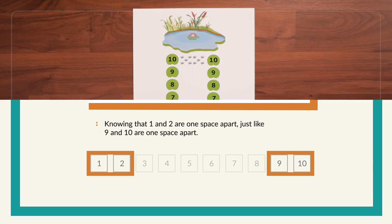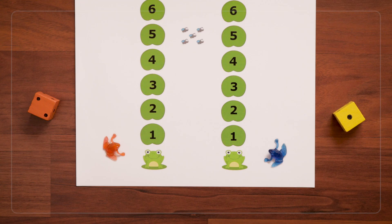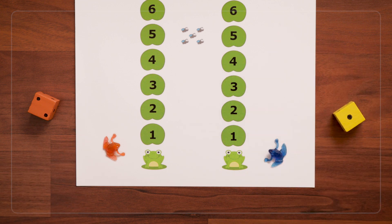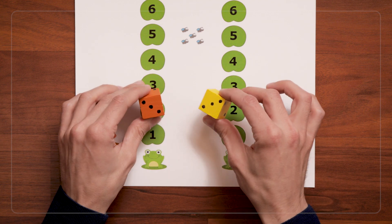So once kids are comfortable hopping 1 to 5, you can move on to the 1 to 10 board. And here I have slightly smaller frogs than before because they'll fit better on my board. For this you can continue with the 1 to 2 dice or use 1 to 3 dice.